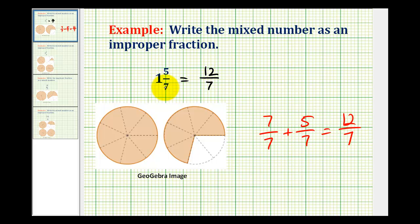So when we multiply the denominator times the whole number, we're determining how many pieces of the fraction the whole number represents.